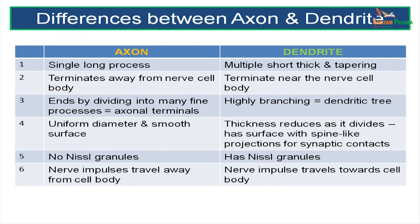Let's summarize some differences between the axon and the dendrite. The axon is a single long process whereas dendrites are multiple, short, thick and tapering. An axon terminates away from the cell body whereas a dendrite terminates towards the cell body. An axon ends by dividing into axonal terminals; a dendrite forms a dendritic tree. An axon is of uniform diameter and smooth whereas a dendrite tapers and is spiny. There are no Nissl granules in the axon whereas there are Nissl granules in the dendrite. Nerve impulses travel away from the cell body through an axon whereas a dendrite brings nerve impulses towards the cell body.